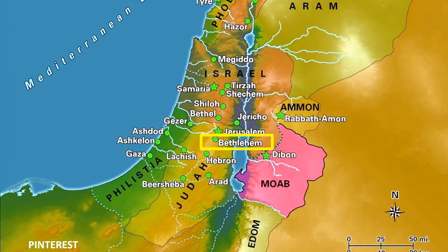The geographical setting of Ruth begins in the Gentile country of Moab, located southwest of the Dead Sea in what is now Jordan, approximately 100 miles from Bethlehem. At the introduction of the book, Elimelech, his wife Naomi, and their sons Chilion and Mahlon had relocated to Moab due to famine in Judah. There Naomi's sons married Moabite women, Orpah and Ruth, but Elimelech died, and within ten years both sons died, leaving Naomi in deep despair along with her two daughters-in-law.